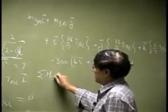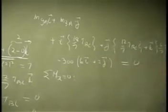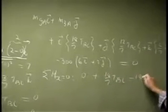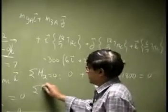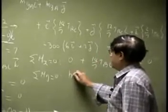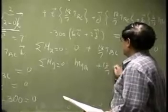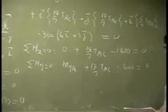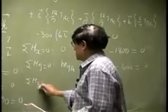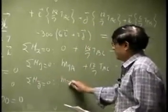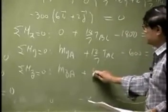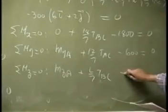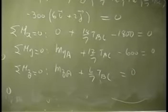So our first equation, moment for x axis to be 0 means 0 plus 18/7 T_BC minus 1800 that goes to 0. Then you have sum of the moments about Y to be 0, you get M_YA plus 12/7 T_BC. And you got this, the negative 600, and that goes to 0. Then sum of the moments about C axis to be 0, and that should give us M_CA plus 6/7 T_BC from here, and that should go to 0.